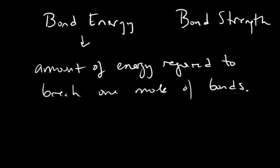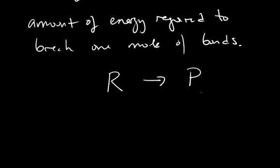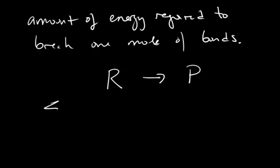Thinking about how we can use this to estimate the change in enthalpy of a particular reaction — consider the fact that change in enthalpy is a state function. If we have a reaction proceeding to products, we can estimate the change in enthalpy of the reactants going to products by thinking about the summation of all the energy it takes to break all the bonds of all the reactants such that they become individual atoms.